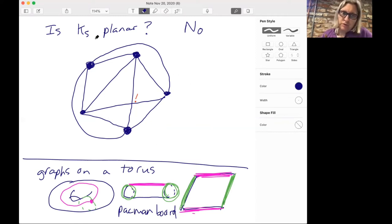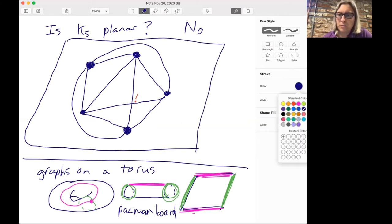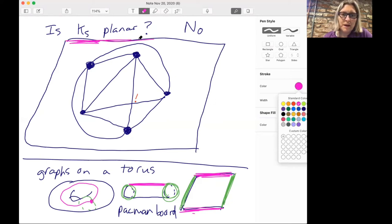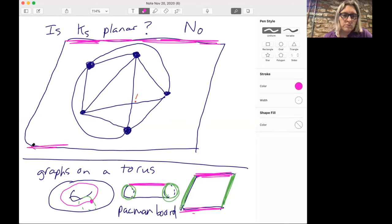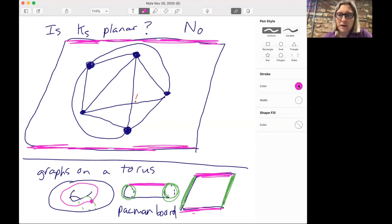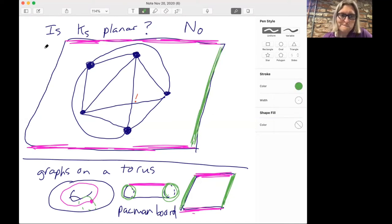Okay, so we're going to now, so K5, is K5 planar? No. Now we're going to go back and see, could we draw it on a torus? And we could try to draw it on this torus, which is in three dimensions, but it might be easier to draw it on the Pac-Man board and just be aware that if we go off the top, then we come back in on the bottom. And if we go off on the left, we come back in on the right. Okay, so here's the top and the bottom are pink, and here are the left and the right, which are green.